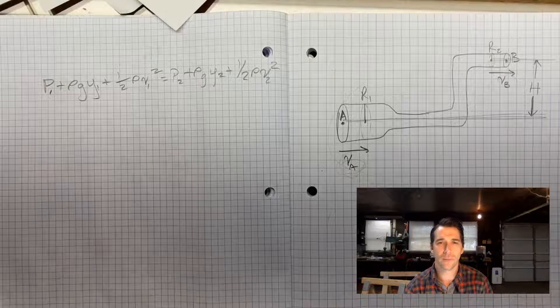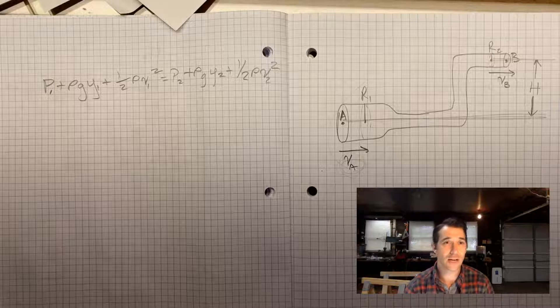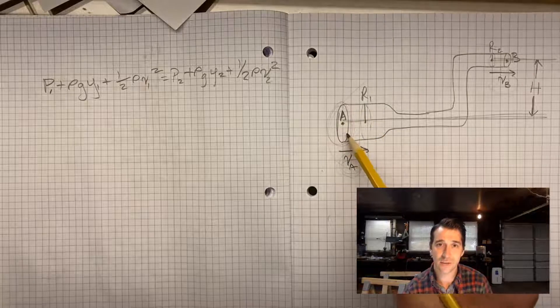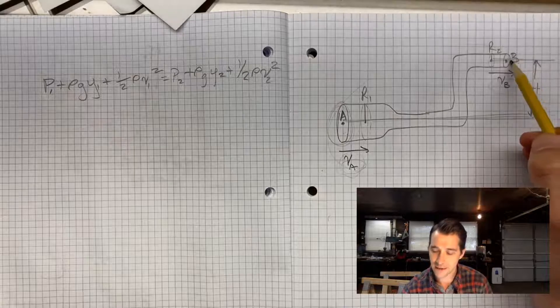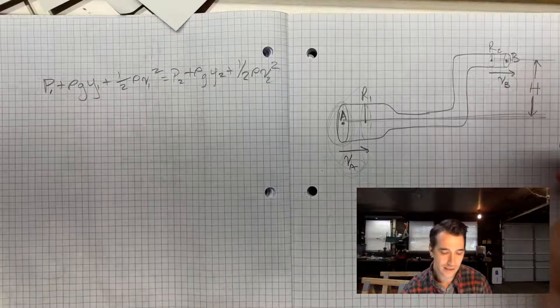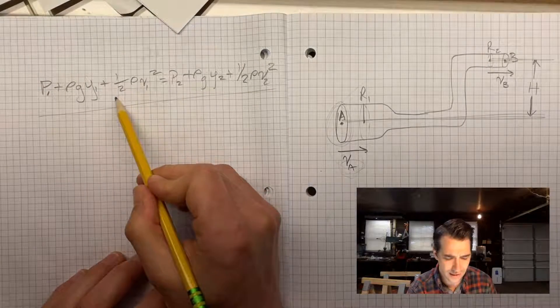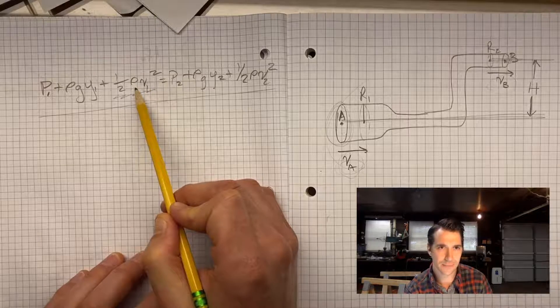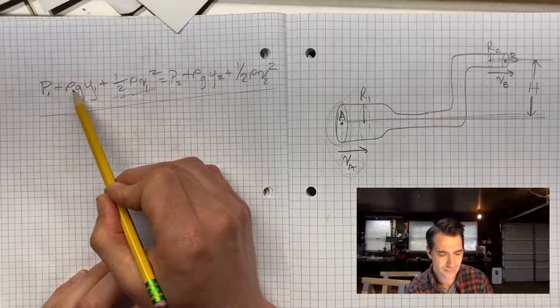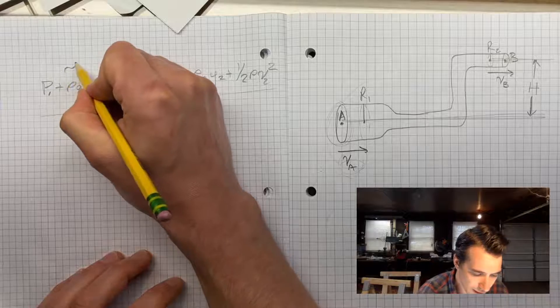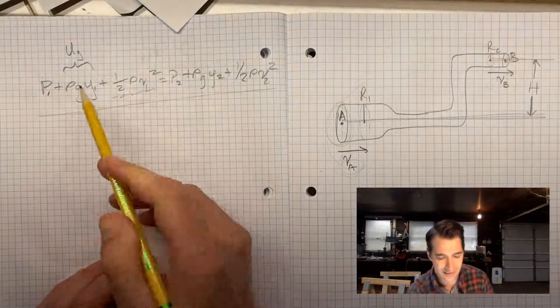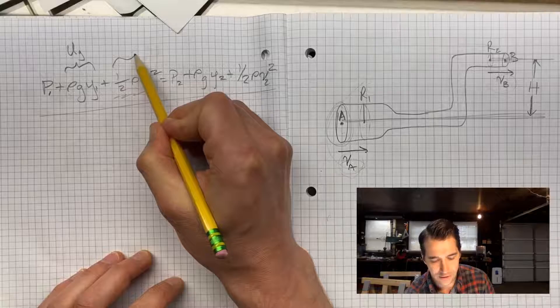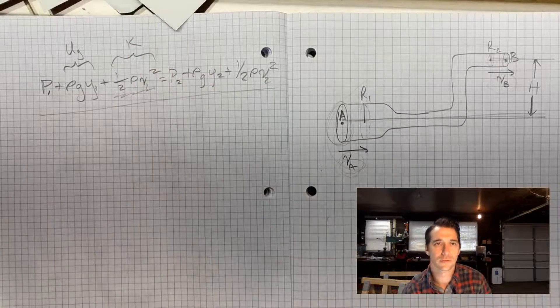What is Bernoulli's equation all about? It's actually a conservation of energy equation. It's telling us that the energy that the fluid has at this location is conserved. It still has the same amount of energy at this end, and you might look at this and say, I don't see energy here. I see some things that look kind of like energy, like this kind of looks like one half M V squared, but we have a density here, and this kind of looks like MGH, our potential energy. Maybe I'll label these. This is potential energy due to gravity, kind of. This is kinetic energy, kind of. We'll see what's going on here.